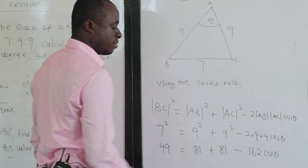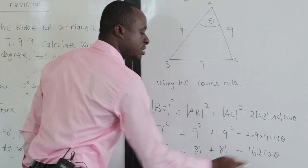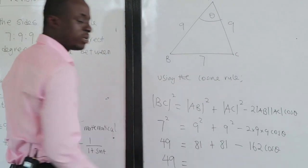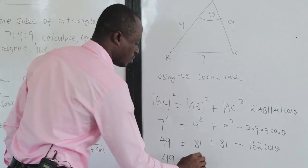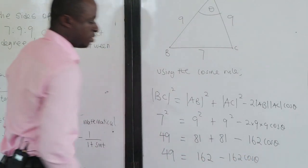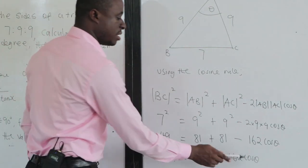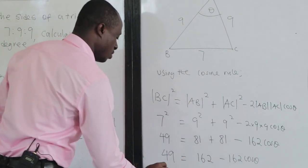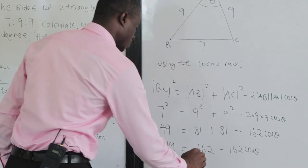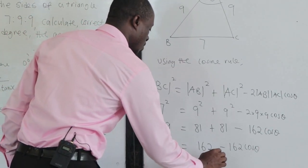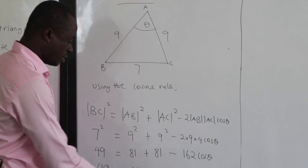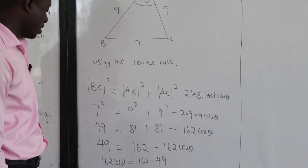We can't subtract the 81 because of the cos theta term, so we have to group like things. We have 49 equals 81 plus 81, which is 162, minus 162 cos theta. Grouping like terms, 162 cos theta equals 162 minus 49, and 162 minus 49 gives us 113.